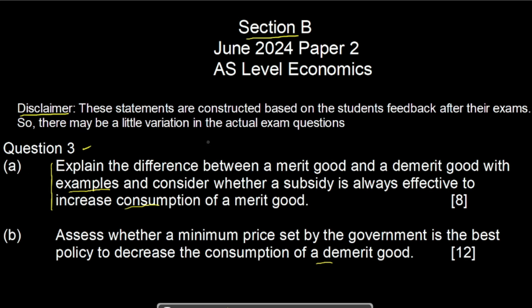Moving to Part A, you have to accomplish Assessment Objective 1, 2, and 3. Assessment Objective 1 is knowledge and understanding — you have to explain the terms given in the question, and it carries 3 marks. Assessment Objective 2 is analysis — you will explain how a subsidy can increase consumption of a merit good, and this also carries 3 marks. The best answer will include a diagram of subsidy. Assessment Objective 3 is evaluation and carries 2 marks — here you will say why a subsidy might not always be effective.